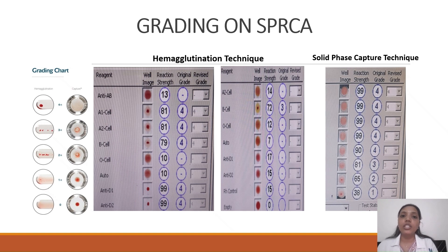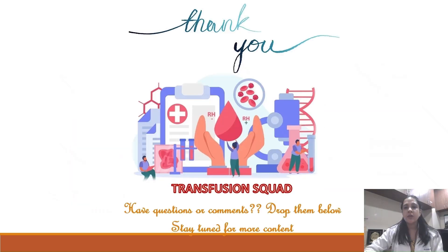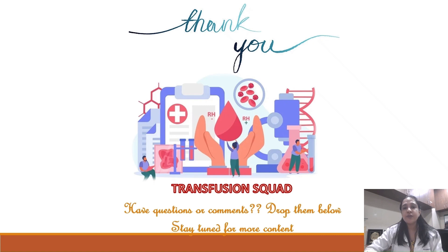Thank you for your patience in listening. Stay tuned to this channel for more videos. Thank you Dr. Soumya for the brief description on grading and scoring of agglutination reactions. In SPRCA there are two assays: one based on hemagglutination and the other on indirect antiglobulin test, and scoring differs between them. Blood grouping uses hemagglutination, while antibody screening, identification, and titration use the indirect antiglobulin method. Mixed field reactions are a commonly asked exam topic — be aware of the causes and how to detect them. Drop any questions in the comments below and we will get back to you.